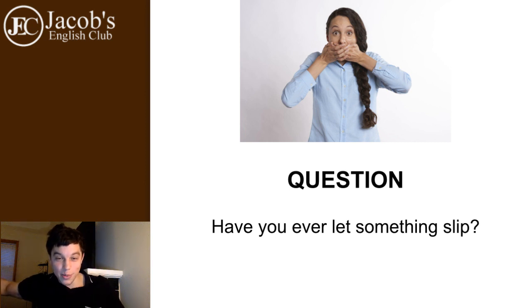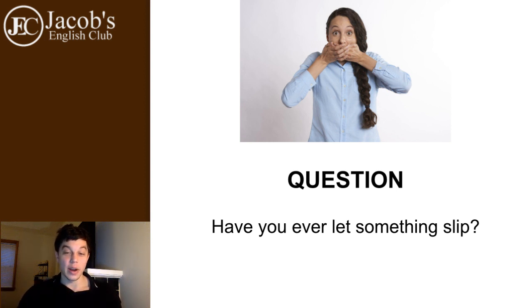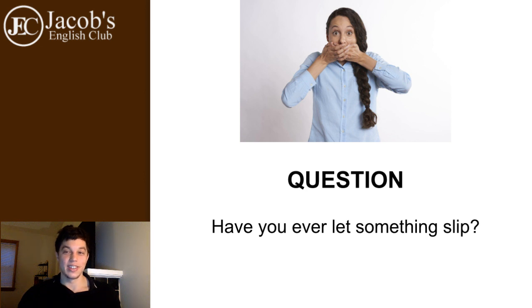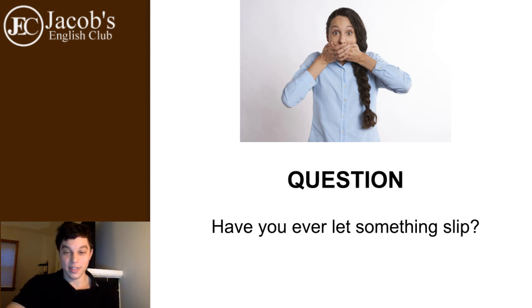Taylor Huang says 'I let slip my sister's having a boyfriend she didn't want our parents to know about.' I would say: 'I let slip that my sister had a boyfriend' — or 'has a boyfriend' depending on tense. I imagine that's a very common situation where people are hiding their partners from their parents. Great example, Taylor — nicely done! If you'd like to practice with this phrase, type it in the comment section.